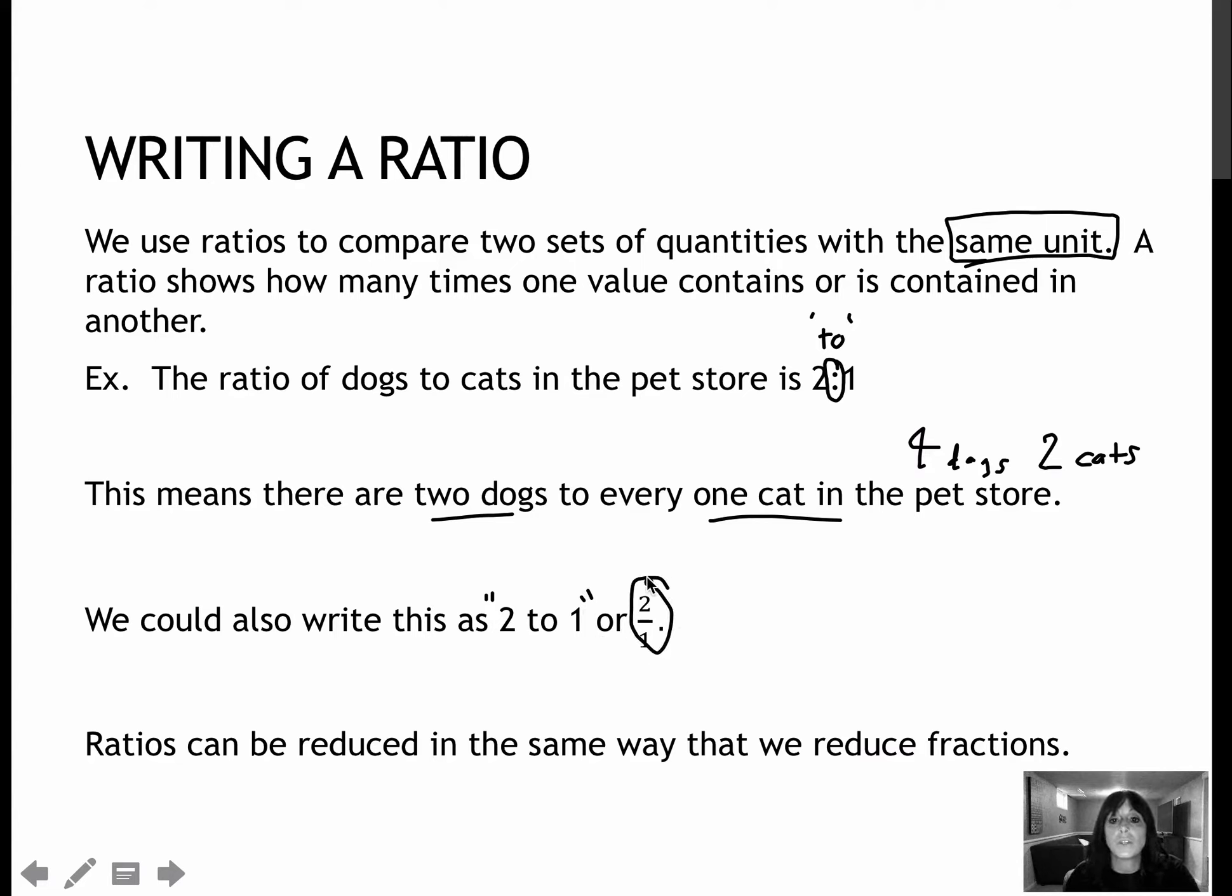We're going to use this way quite a bit, obviously because we've been dealing quite a bit with fractions anyway, and so we already know what to do to add, subtract, multiply, etc. And it also helps that ratios can be reduced in the same way that we reduce fractions. So if I said the ratio of dogs to cats was four to two, then you could reduce that to two to one by dividing each value by two.